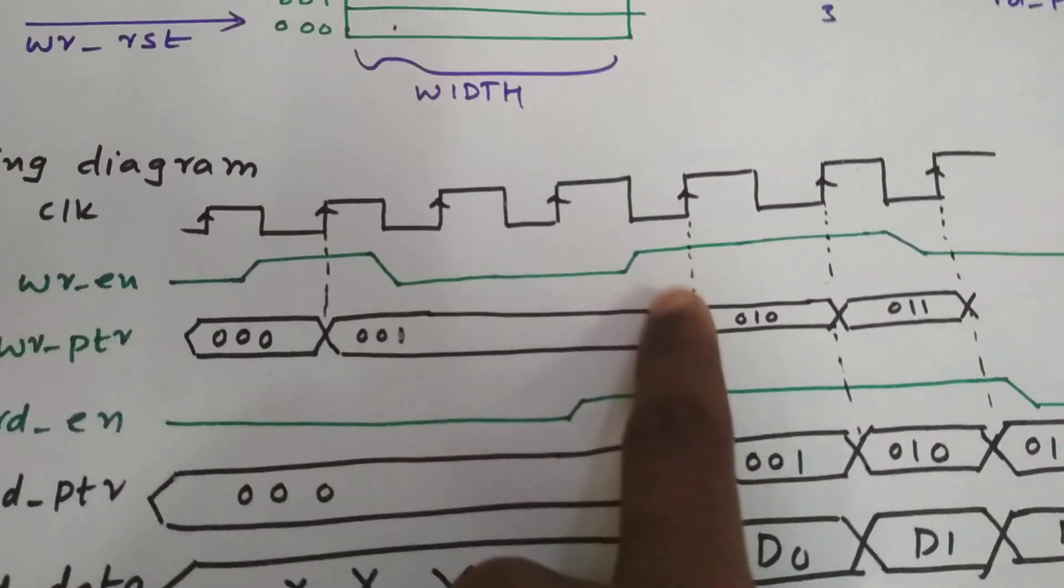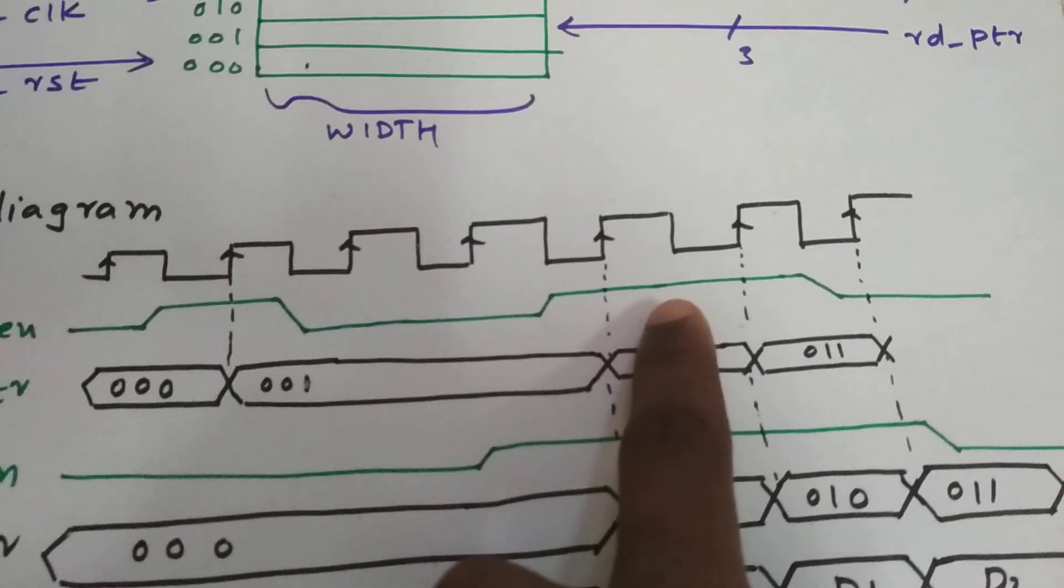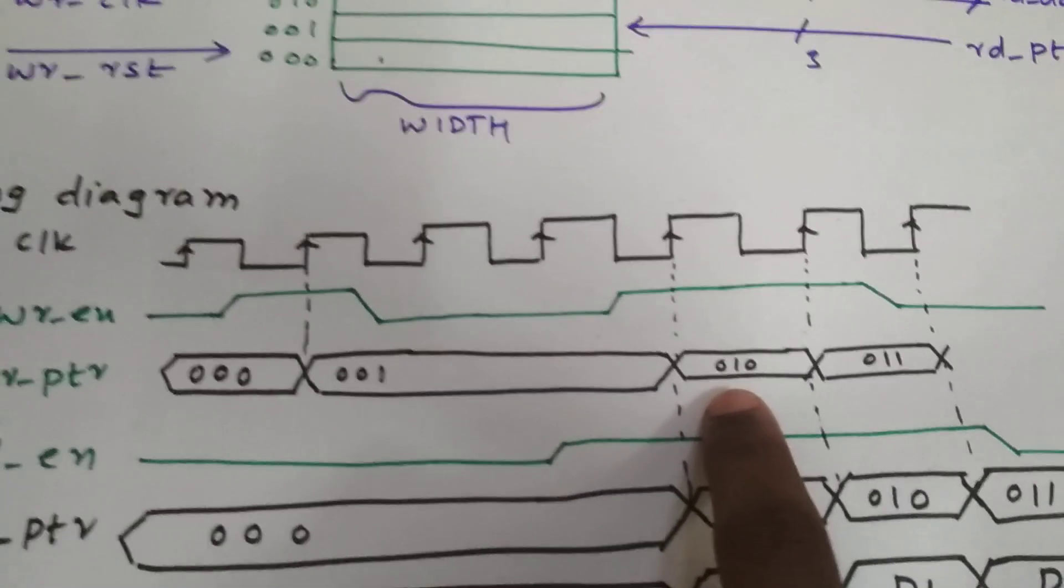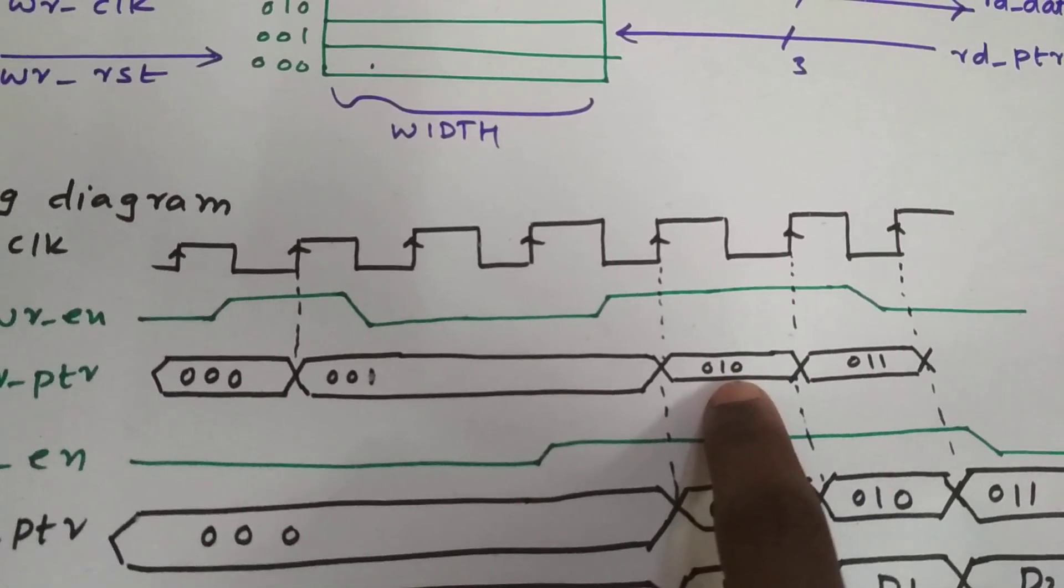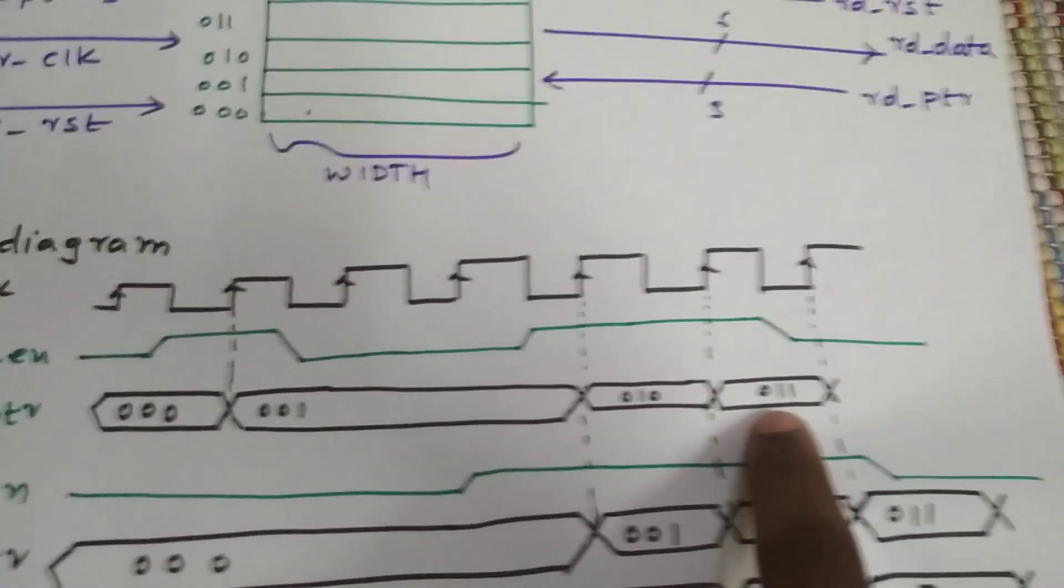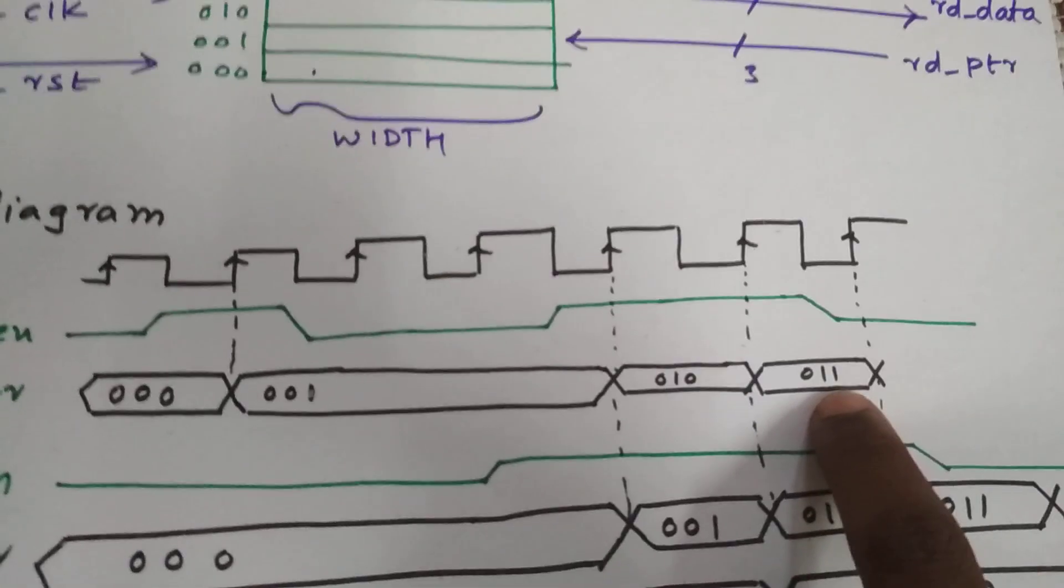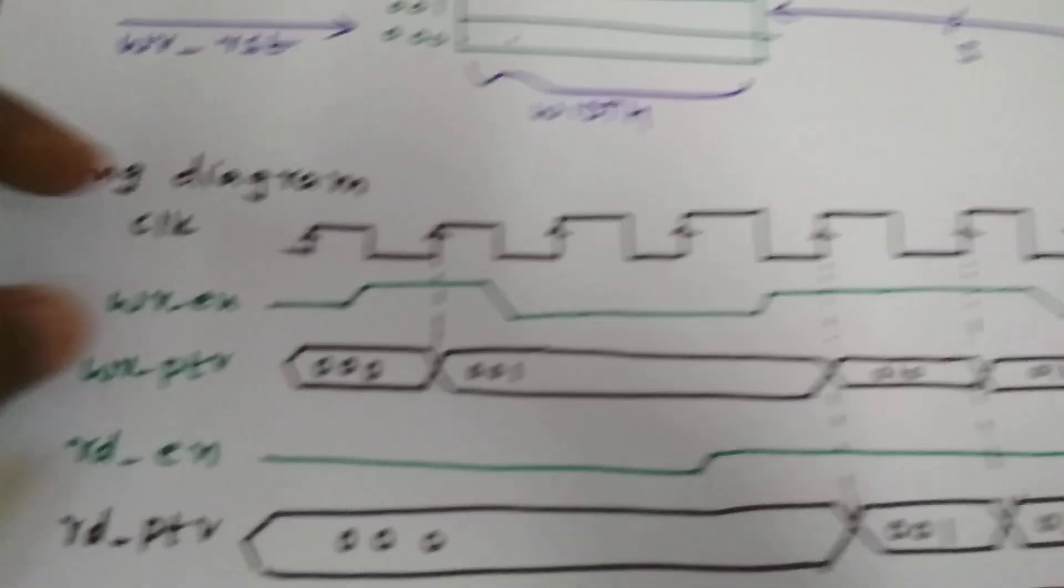And after, we have another write enable high over here. So write pointer will be incremented to 010. And write data will be written into 010. And again, write enable is high. We'll go into the third location, and the data will be written here. So this is the write operation signals.